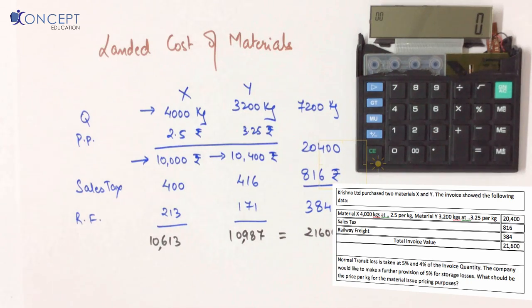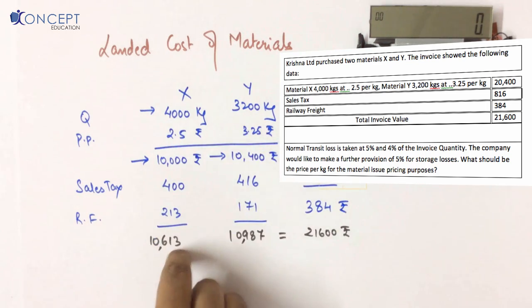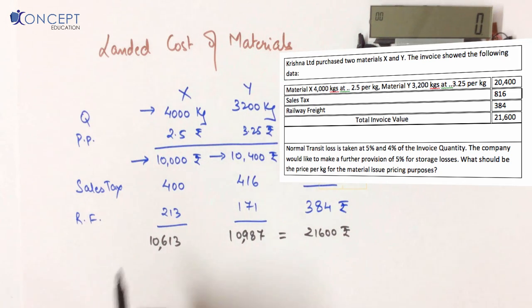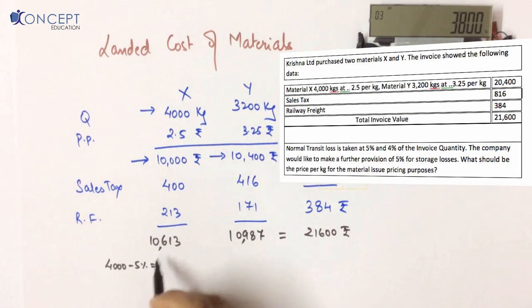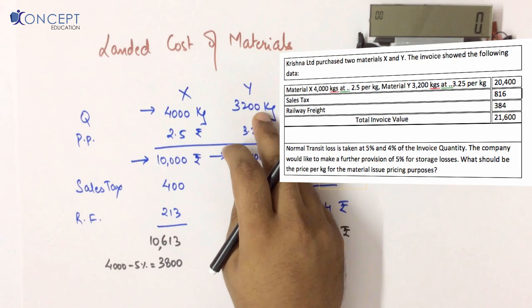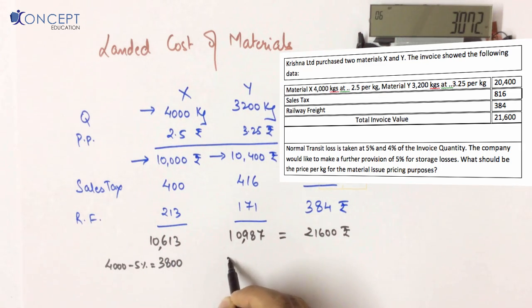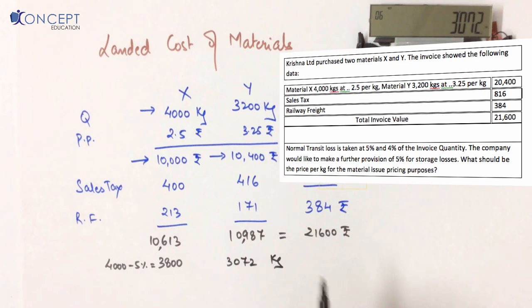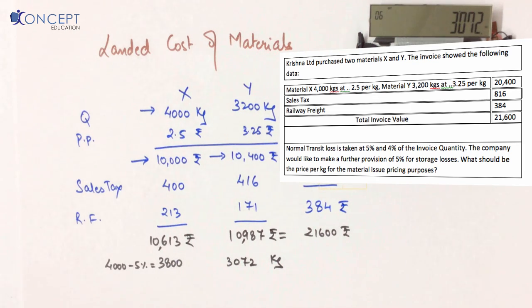Now there is a twist in the problem. Normal transit loss is taken as 5% for X and 4% for Y. This means from the 4,000 kg ordered, 5% will be lost, leaving 3,800 kg of X. For Y: 3,200 minus 4% equals 3,072 kg remaining. So 10,613 rupees and 10,987 rupees remain the same in cost, but the quantity has reduced.